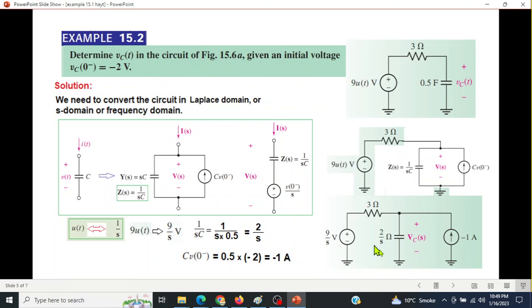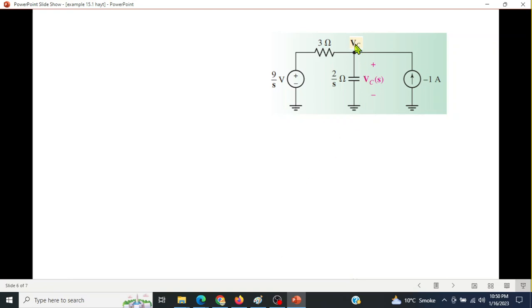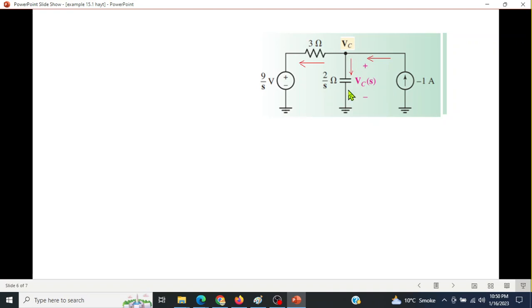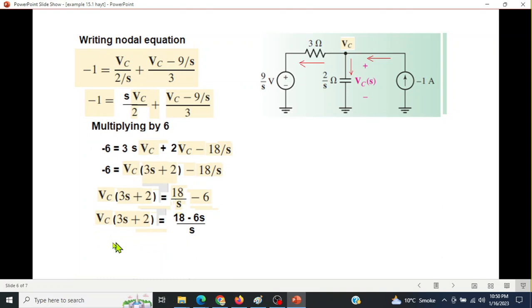We have to find VC(t), which is VC(S) in S domain. We'll solve by nodal analysis. Drawing currents entering and leaving, writing the nodal equation: entering 1/S, leaving VC/(2S), and (VC-9/S)/S. The minus is because this voltage source current is in opposite direction. Simplifying, VC is in this form.